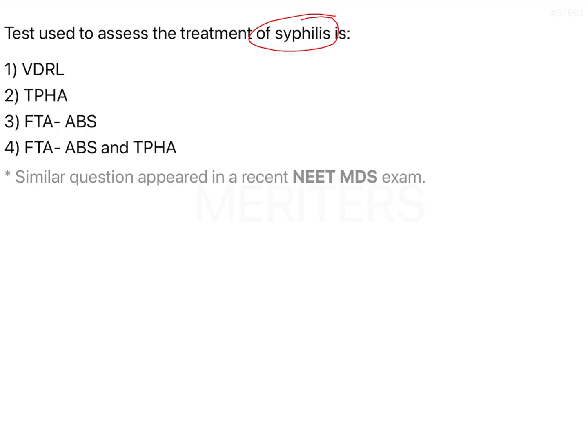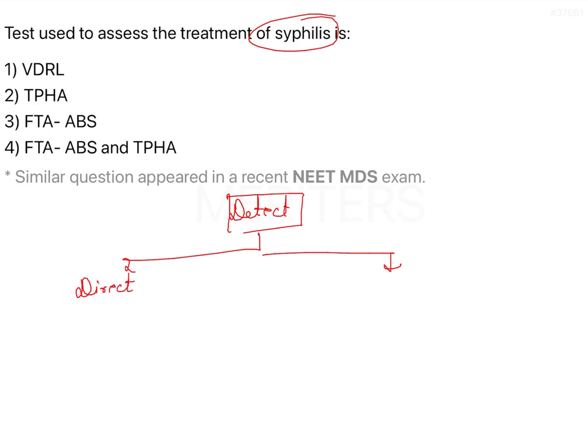Syphilis is a disease caused by Treponema. This disease can be identified by a direct method or by serological test. So if you want to detect syphilis, there are two methods: direct identification of the Treponema, or using serological tests to detect IgG or IgM antibodies.